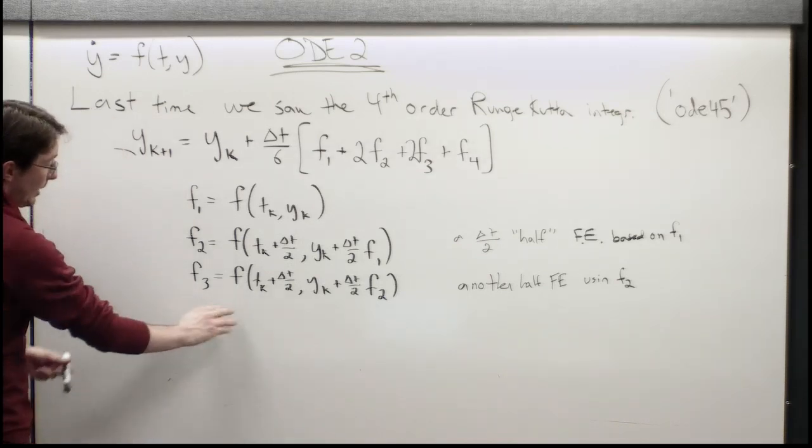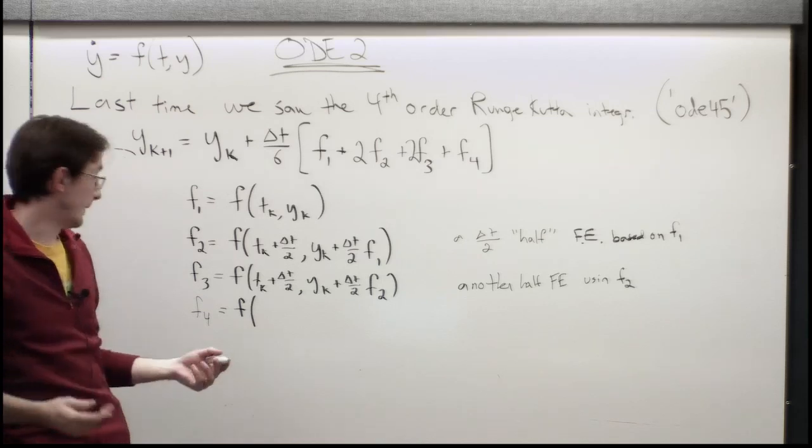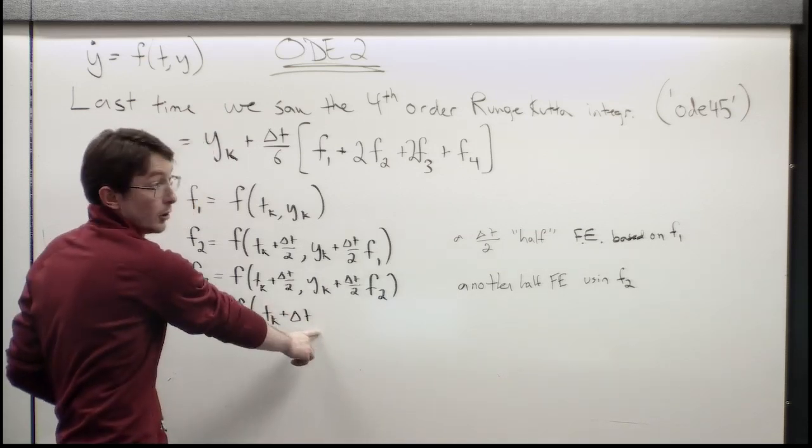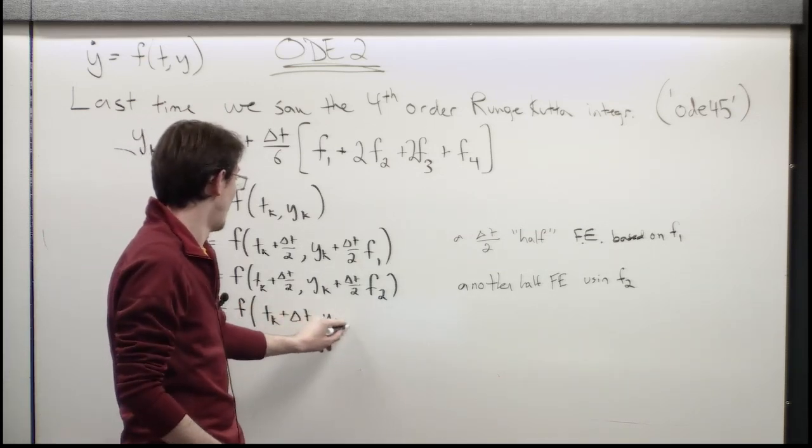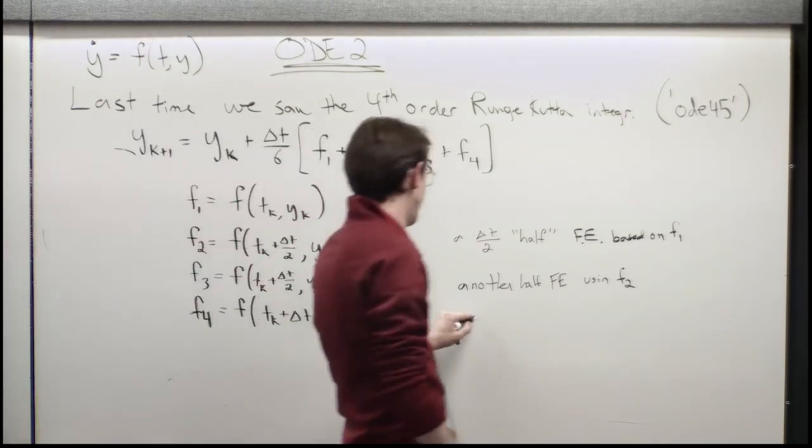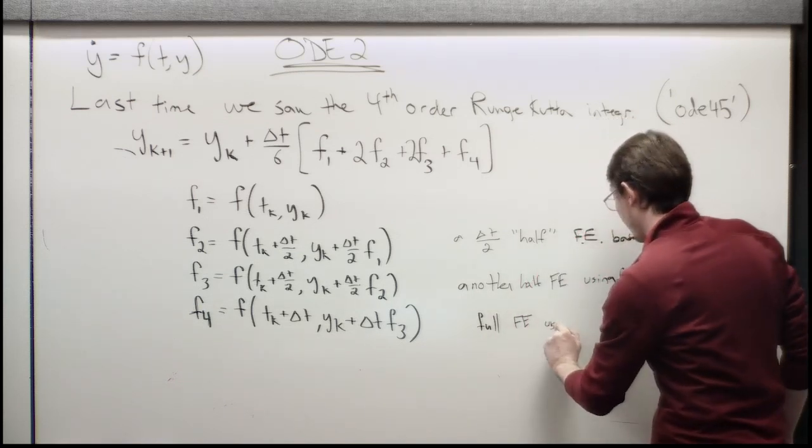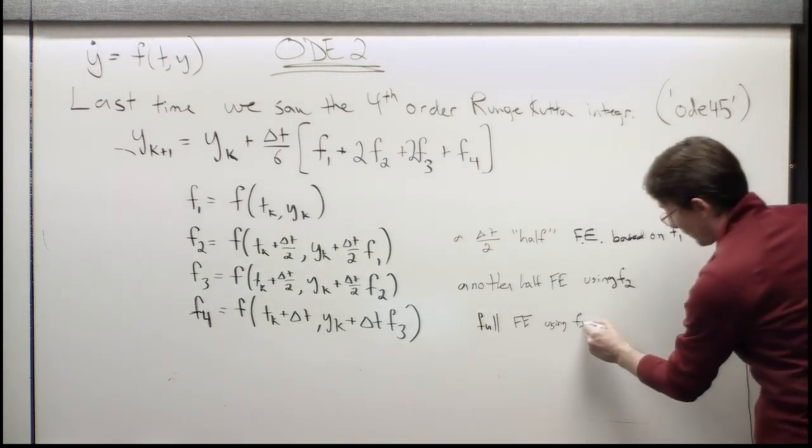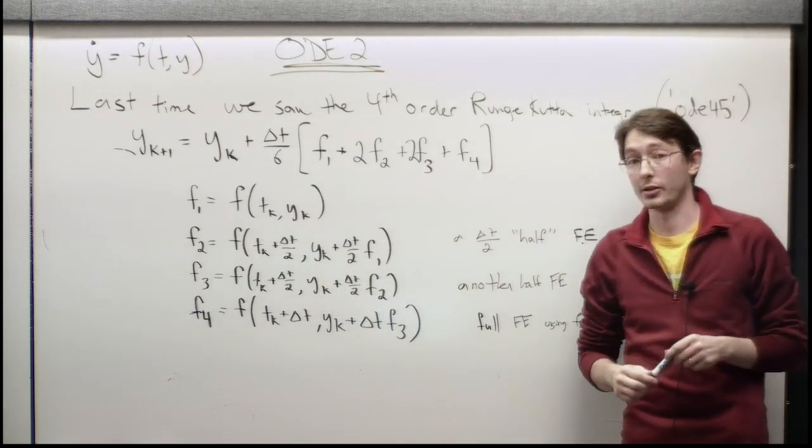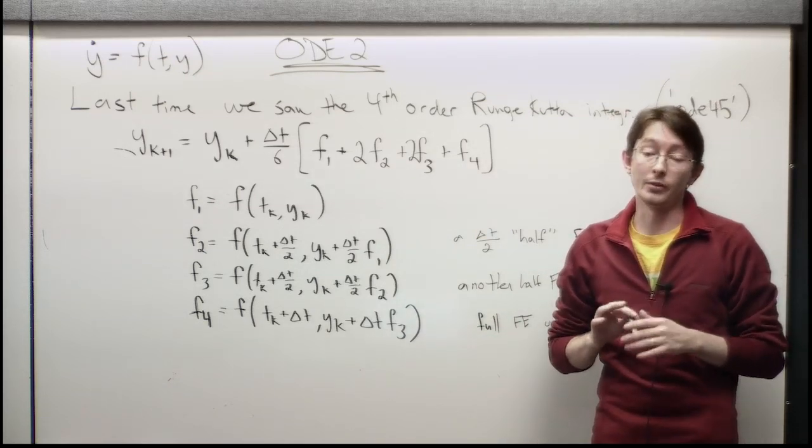Now the final step F4: F4 equals our vector field F evaluated at TK plus delta T. Now this is looking like a full Euler step: YK plus delta T F3. This is now a full forward Euler using F3. So this is actually pretty straightforward. It's intuitive to think about what's actually happening here. Deriving this integrator and showing that it has favorable error properties is quite involved and we would like to avoid it.